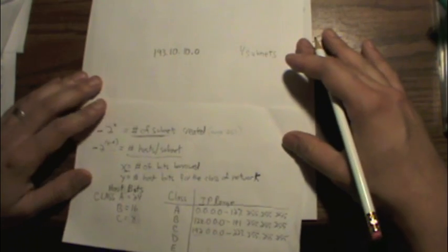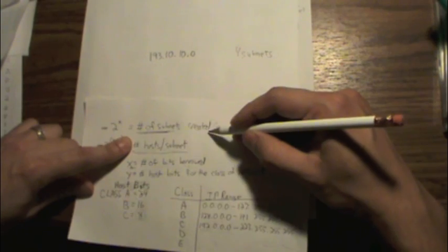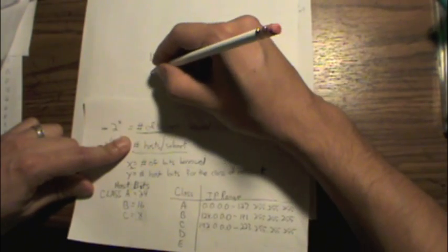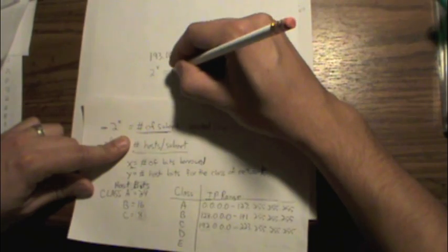Taking a look at our equations here, we want the number of subnets created to be four. So we're going to want to plug in 2 to the x equals 4.